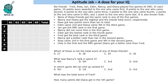In each game, ten points were awarded to the one who came first, eight points to the one who came second, six points to the third, four points to the fourth, two points to the fifth, and one point to the one who came last. So this way the points were distributed across five games with six people playing.